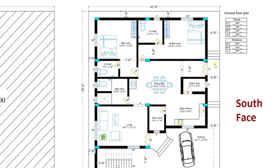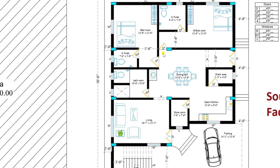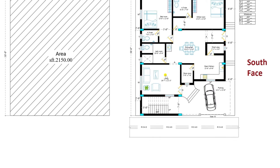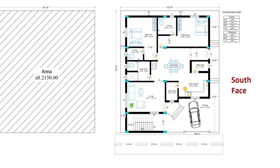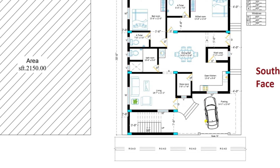All outer walls are 9 inches and the inner walls are 4.5 inches. This is a very comfortable plan for a normal family.